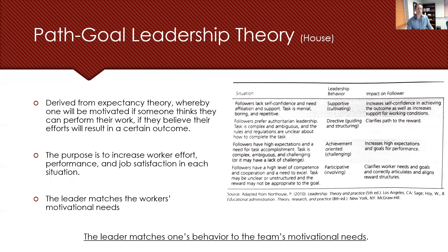Regarding the leadership behaviors in path-goal theory: supportive-oriented leaders are those viewed as respectful, caring, and approachable, who take genuine interest in their workers' well-being and working conditions. Directive leaders instruct and monitor progress on time, quality, and expectations for how the task is to be accomplished. Achievement-oriented leaders express high confidence in their workers as being competent and willing to meet expectations. Finally, participative leaders foster high confidence and cooperation amongst their workers and teams.